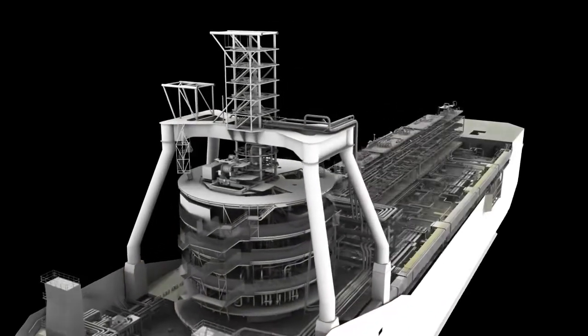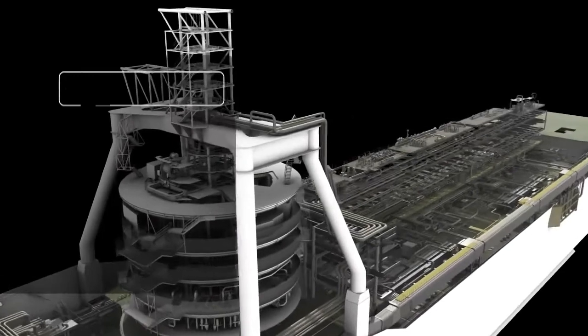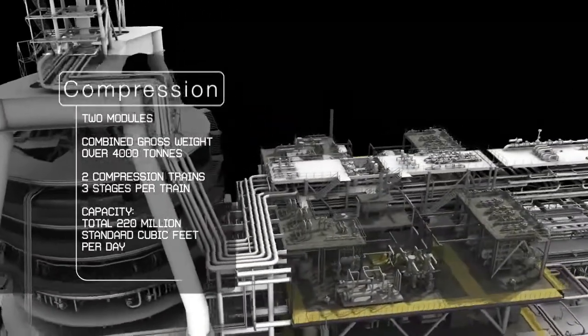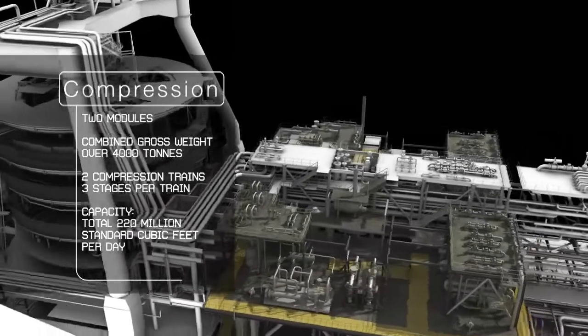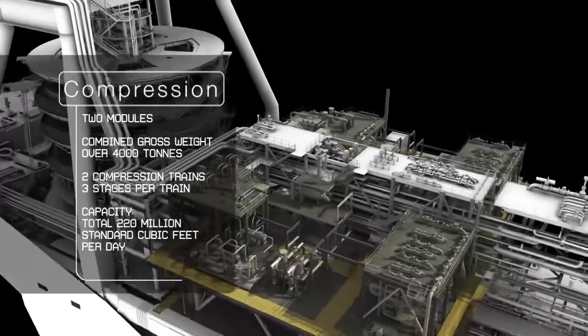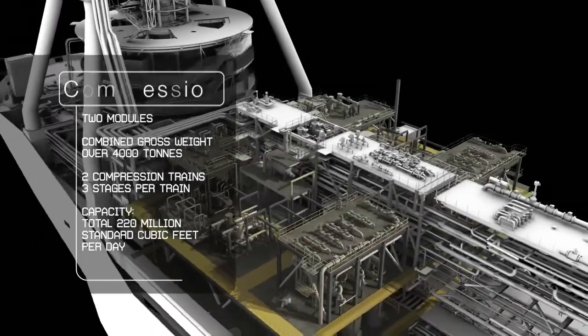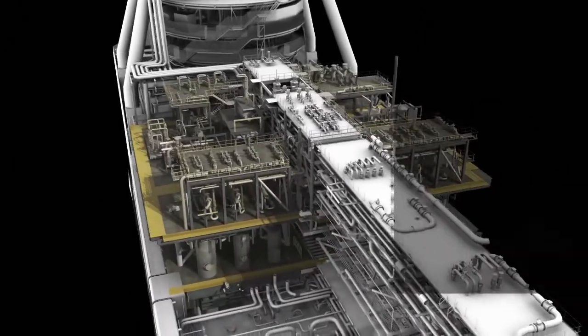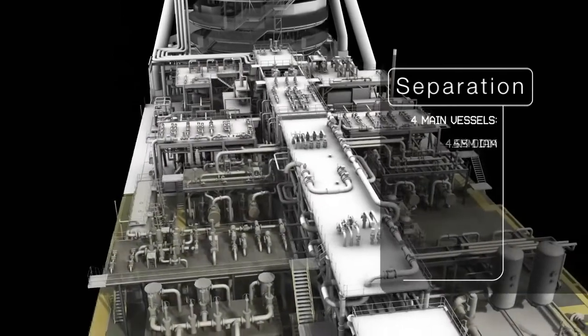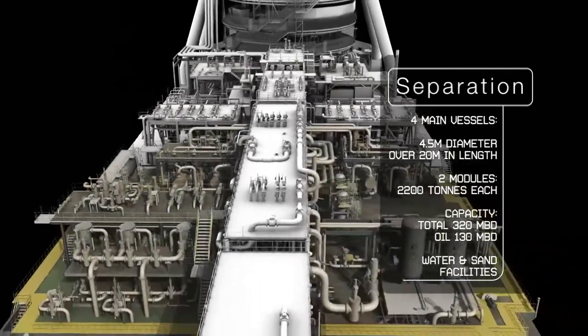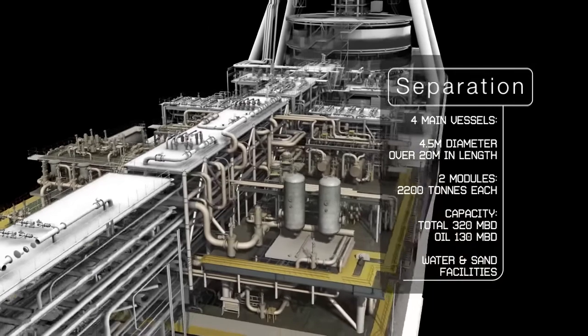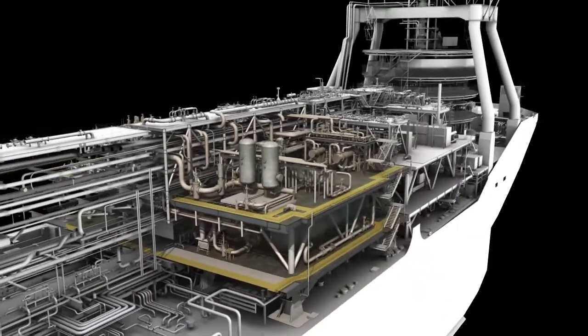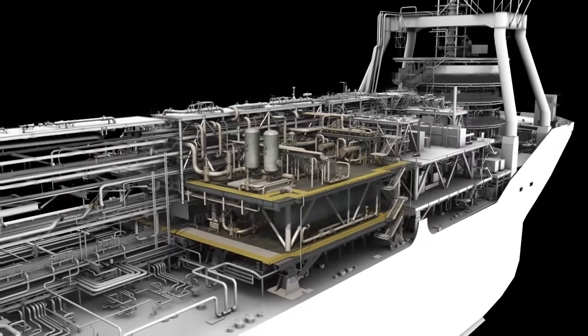Processing the fluids from the turret is done in the topsides modules. The first modules comprised two trains of gas compressors driven by four electric motors and capable of compressing 220 million standard cubic feet of gas per day. Separation will be carried out in two modules with four large separation vessels that together will be capable of separating 130,000 barrels of oil per day. The two modules will weigh about 4,500 tons.